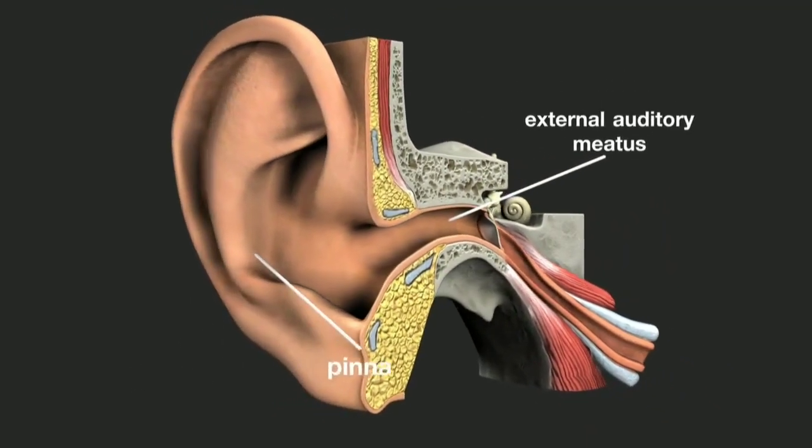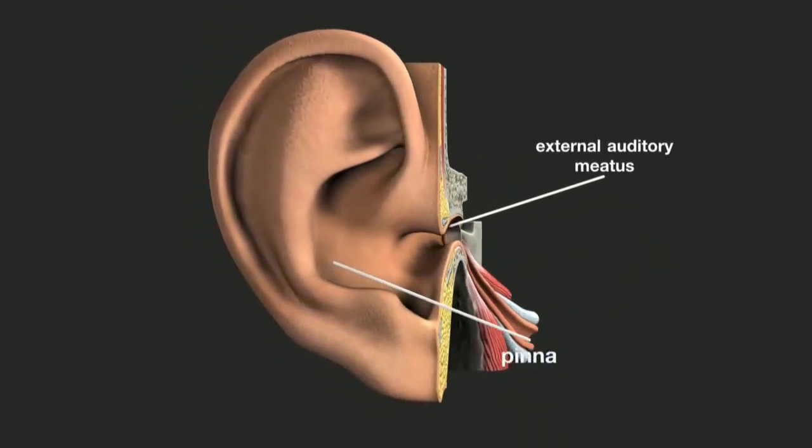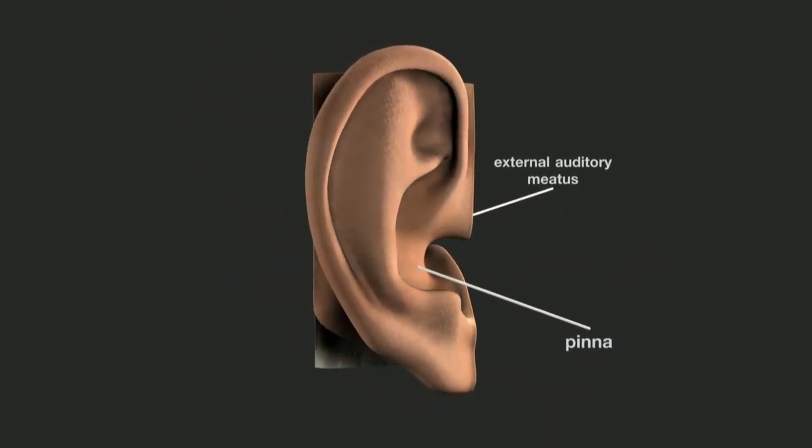The shape of the pinna also helps to detect where sounds are coming from in the vertical plane, that is from above or below the ear.